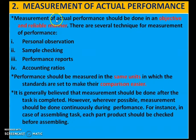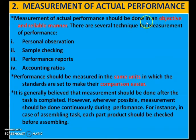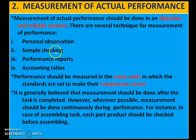The next step of controlling is measurement of actual performance. In the first step we set a standard, and now once we start our activity we have to measure our actual performance — how we are doing. Measurement of actual performance should be done in an objective and reliable manner. There are several techniques for measurement of performance: personal observation, sample checking, performance reports, and accounting ratios.